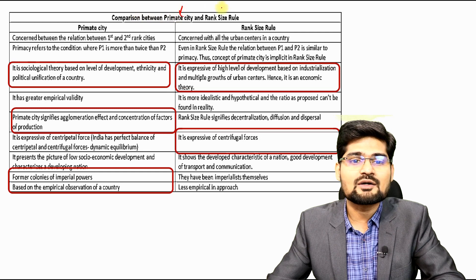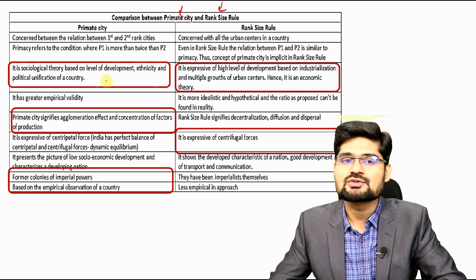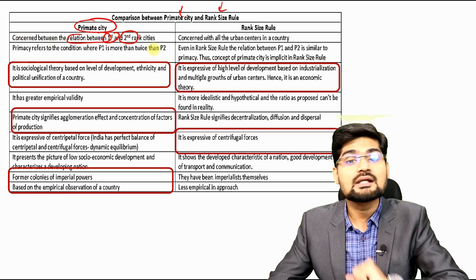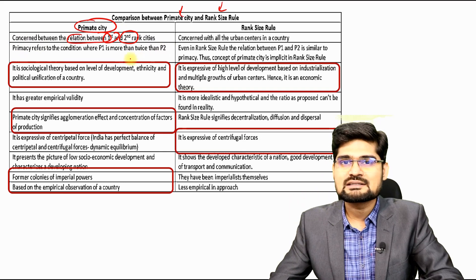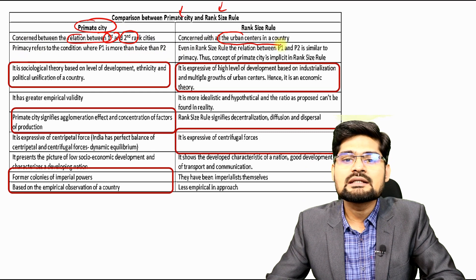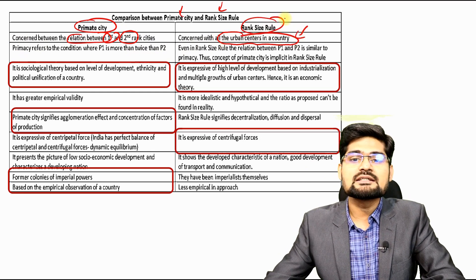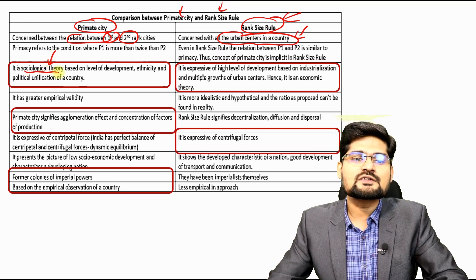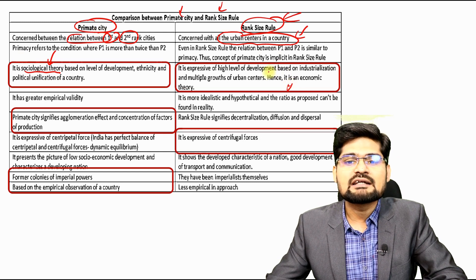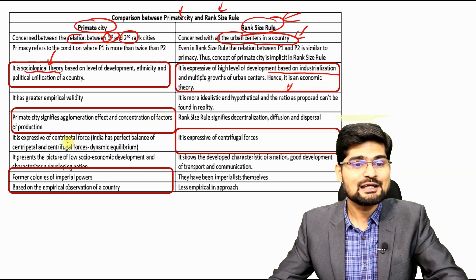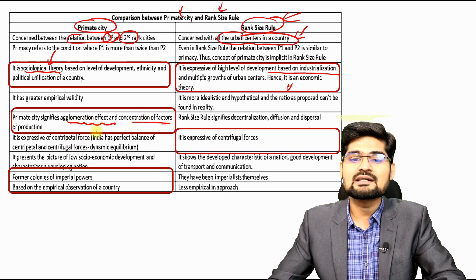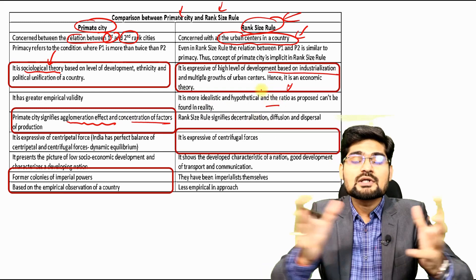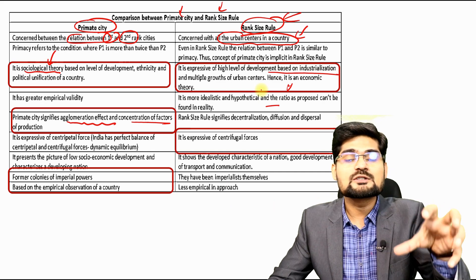Comparing primate city concept with rank size rule: the primate city talked about the relationship between only the first and second rank cities, but the rank size rule is concerned with all urban centers in a country — it has wider applicability. The primate city was more of a sociological theory, while rank size rule is more of a geographical and developmental theory.